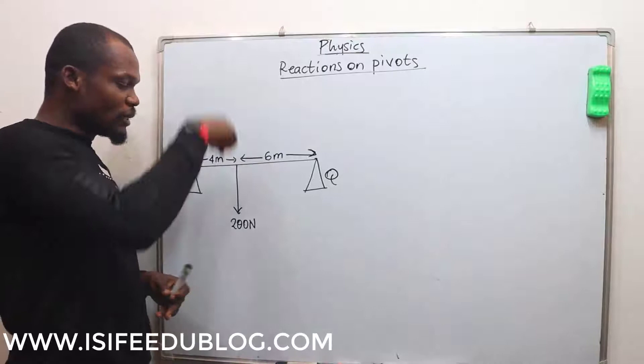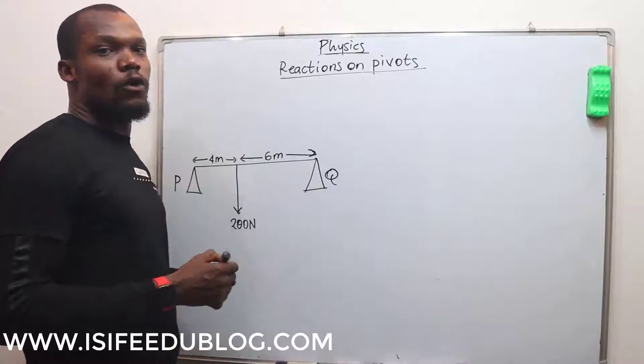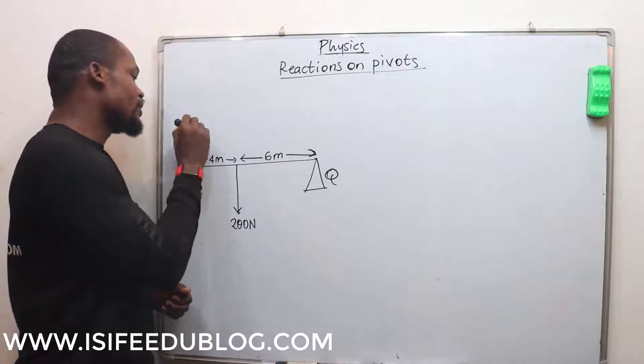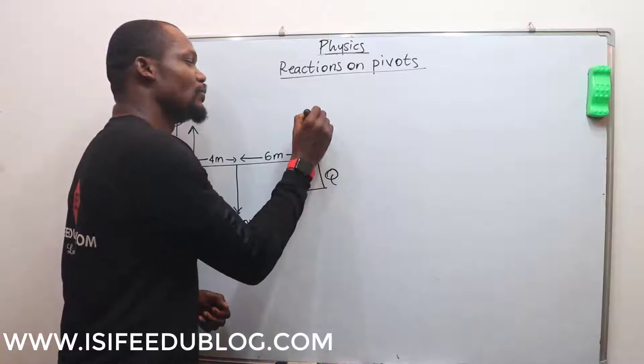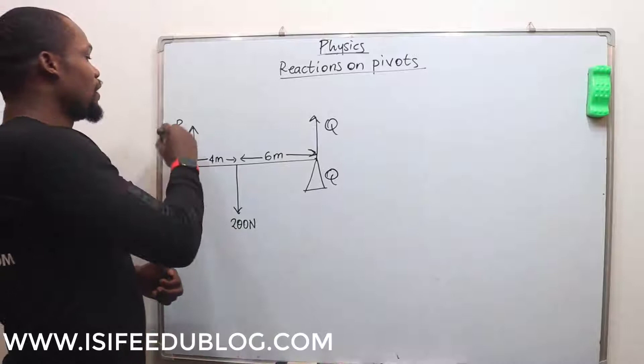Notice that when a force is going down, these two pivots are giving up an upward and opposite force to cancel out the reaction. Hence, let us call the reaction at P going up as P, and the reaction at Q as Q. P becomes the clockwise moment and Q becomes the anticlockwise moment.